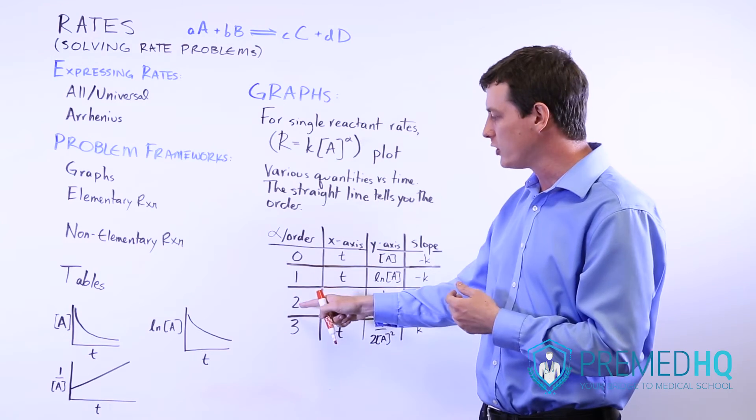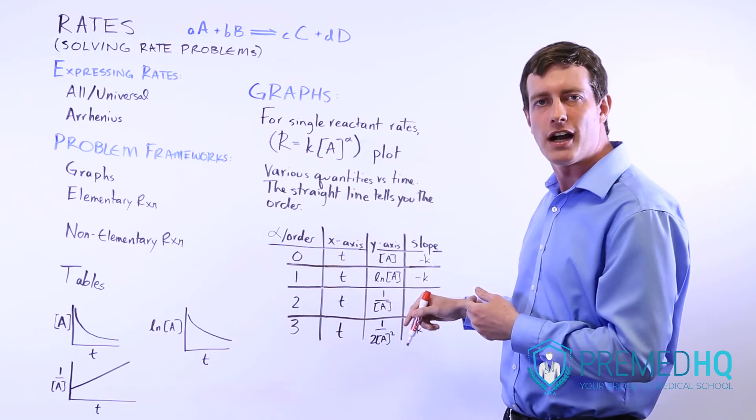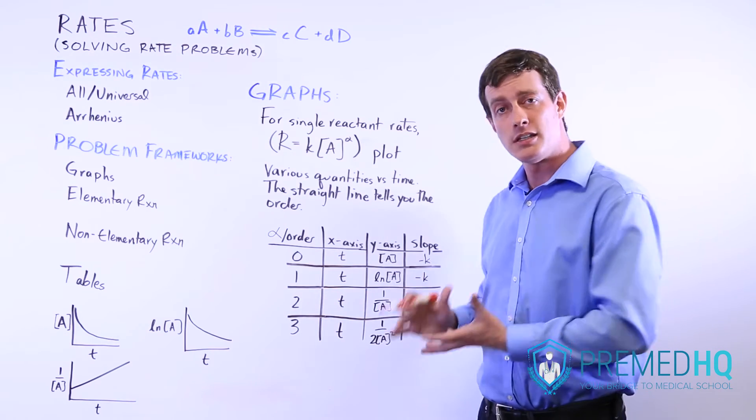Which graph would yield a straight line? And then your job is just to remember, well, if it's second order, it's the 1 over A graph versus time that yields a straight line.